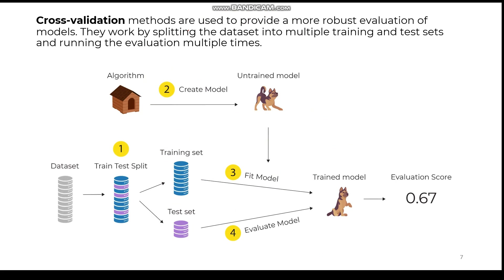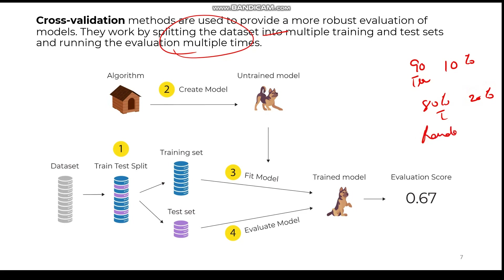Cross-validation provides methods that are used to give a more robust, more accurate, and more efficient model. It works by splitting the dataset into multiple training sets and test sets and then running multiple evaluations multiple times. For example, we can take 90% training and 10% testing, then next time 80% training and 20% testing. We keep on making changes in the randomness of taking the data items from the dataset. The ultimate goal of cross-validation is to get the most robust, accurate, and efficient - the best - model.